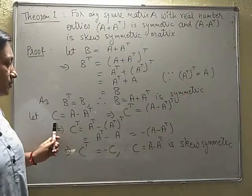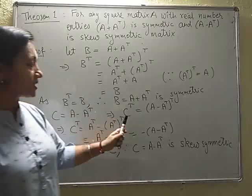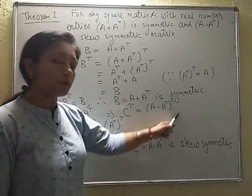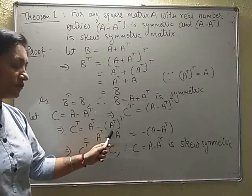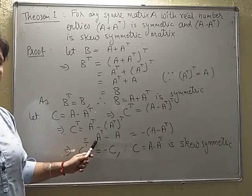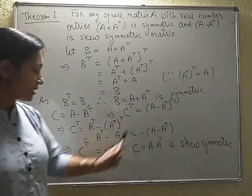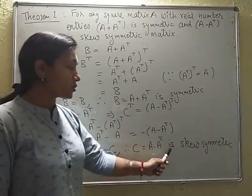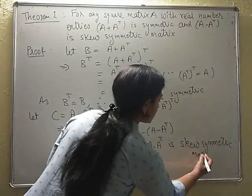In the same way, if we assume C to be another matrix denoting A minus A transpose, and then taking transpose of the matrices on both sides, we get C transpose as transpose of A minus A transpose. Again using the properties of transpose of a matrix, C transpose can also be written as A transpose minus transpose of A transpose. This A transpose stays as it is, but transpose of A transpose can be written as A. Now this is not equal to C, but if I take a minus sign common, the expression in the bracket reduces to A minus A transpose, which is denoting the matrix C. So we see that C transpose is coming out to be minus C — so C is actually a skew-symmetric matrix. That means C, which is A minus A transpose, is a skew-symmetric matrix.